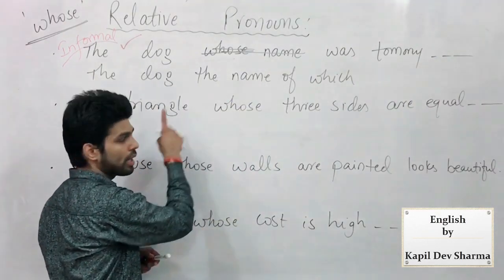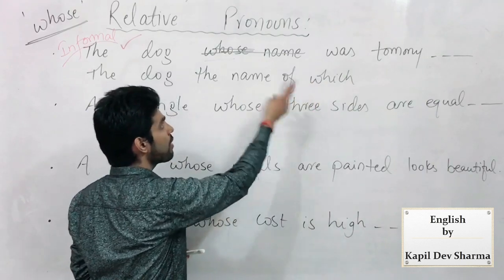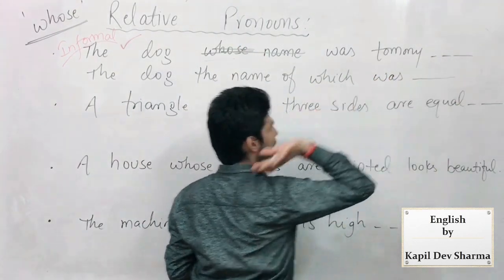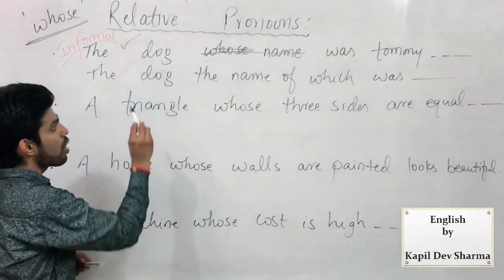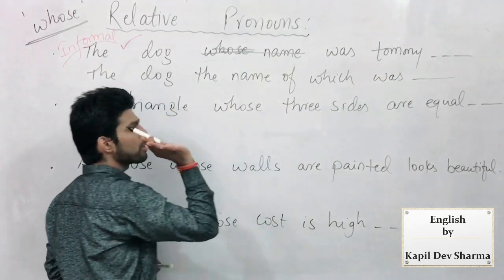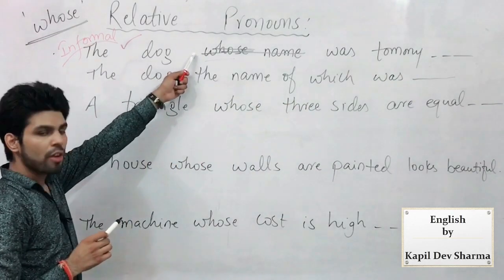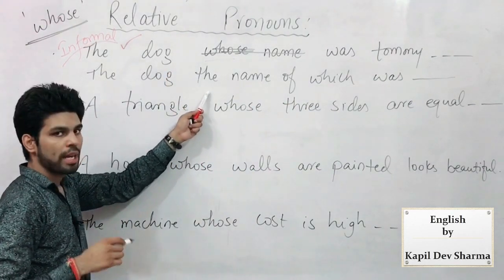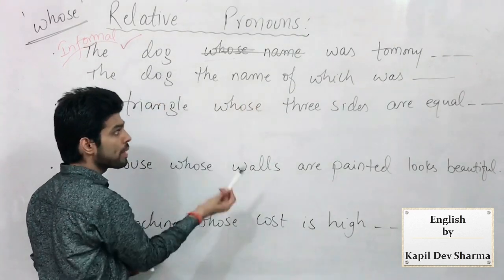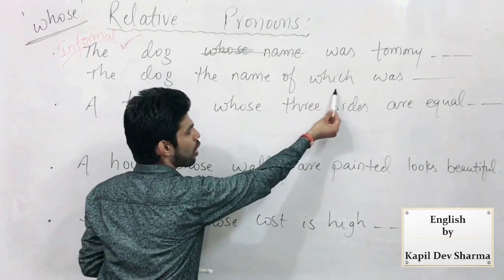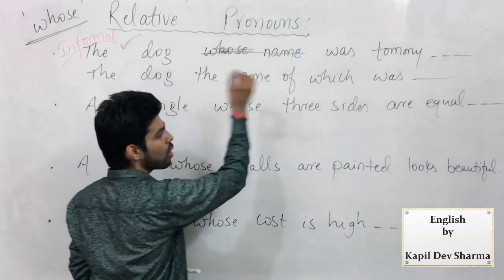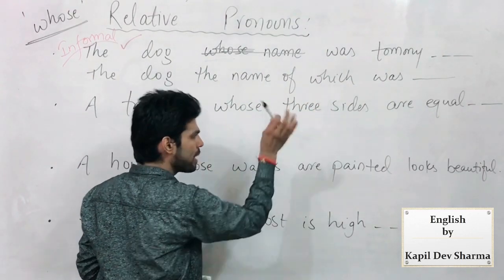Whose name was Tommy — can be written as 'the name of which' — because 'whose' won't come; after a preposition, 'which' is used in objective case. In short: 'the dog whose name' → 'the dog the name of which.' And triangle: 'whose three sides' → 'the three sides of which.' I repeat — 'the name of the dog', and instead of repeating 'dog' we use 'which' — so 'the name of which.'